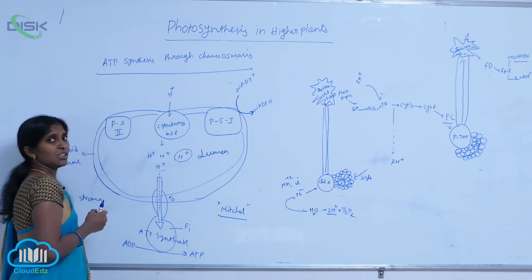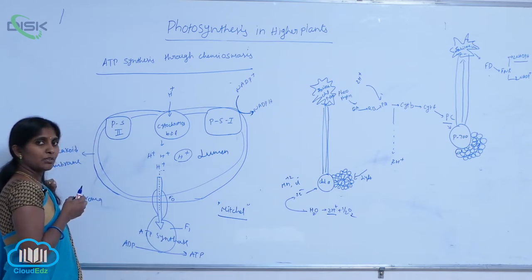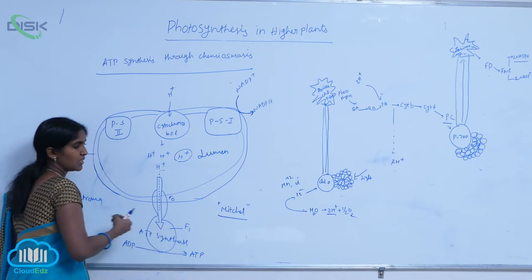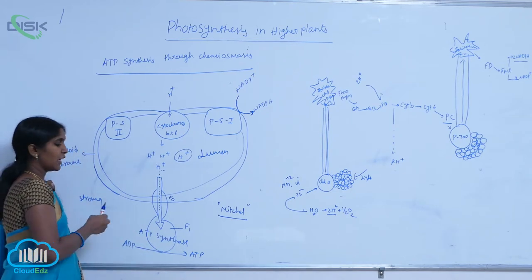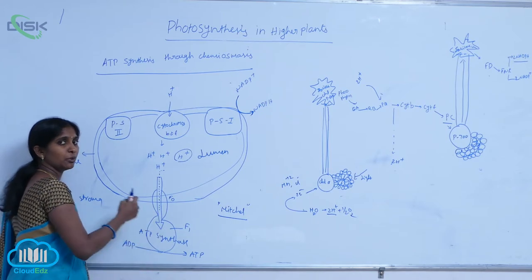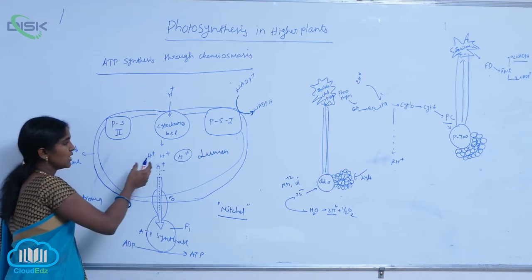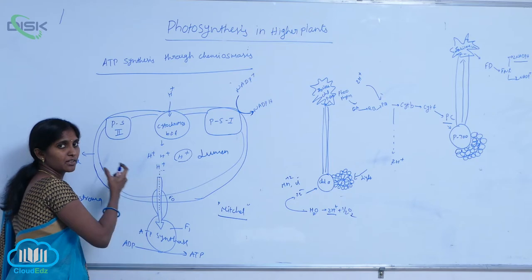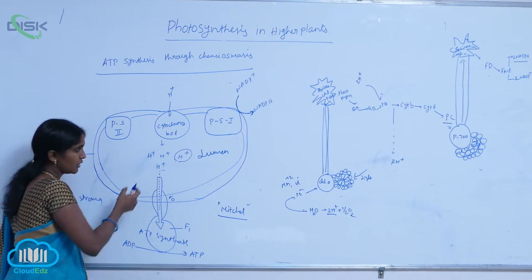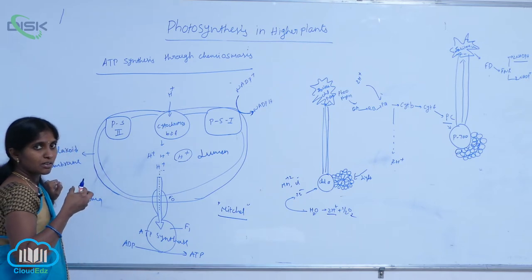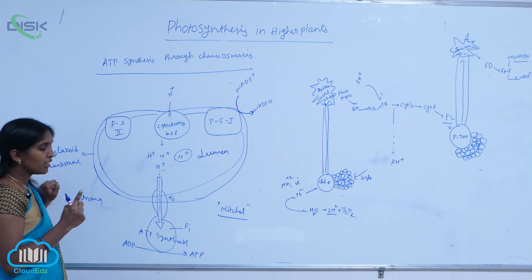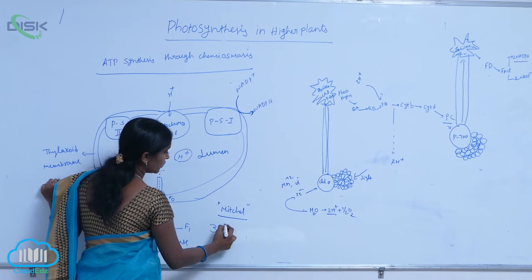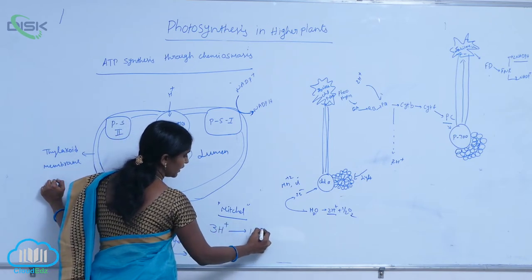The ATPase is activated because of the proton jump. When ATPase is activated, ADP and inorganic phosphate (Pi) are converted into ATP. The proton pump works against the proton gradient, and for every three protons pumped, one ATP is released.